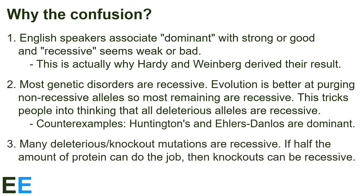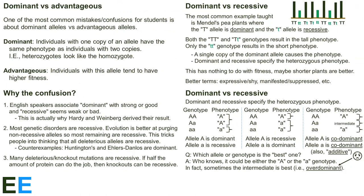Third, many deleterious or knockout mutations are recessive. This can arise when some other protein is responsible for the rate-limiting step in a biochemical pathway. In these cases, heterozygotes only having half the protein may not have an effect on the overall rate of reaction. If half the amount of protein can do the job, then even complete genetic knockout alleles can be recessive. If you're learning population genetics or evolution, take a little time to make sure that the terms dominant and advantageous, recessive, and deleterious are distinct in your mind.